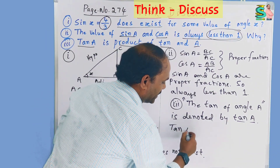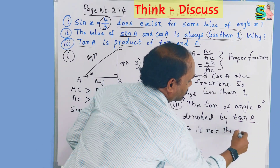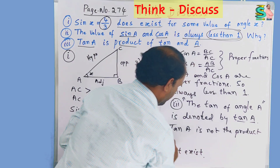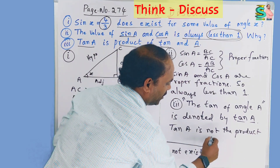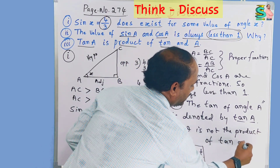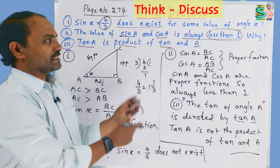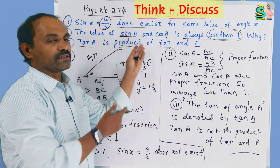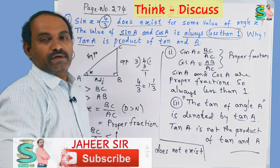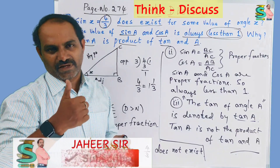That's why tan A is not the product of tan and A. These are the reasons for all three questions. I think you understood. Please like, share, and subscribe. Thank you very much.